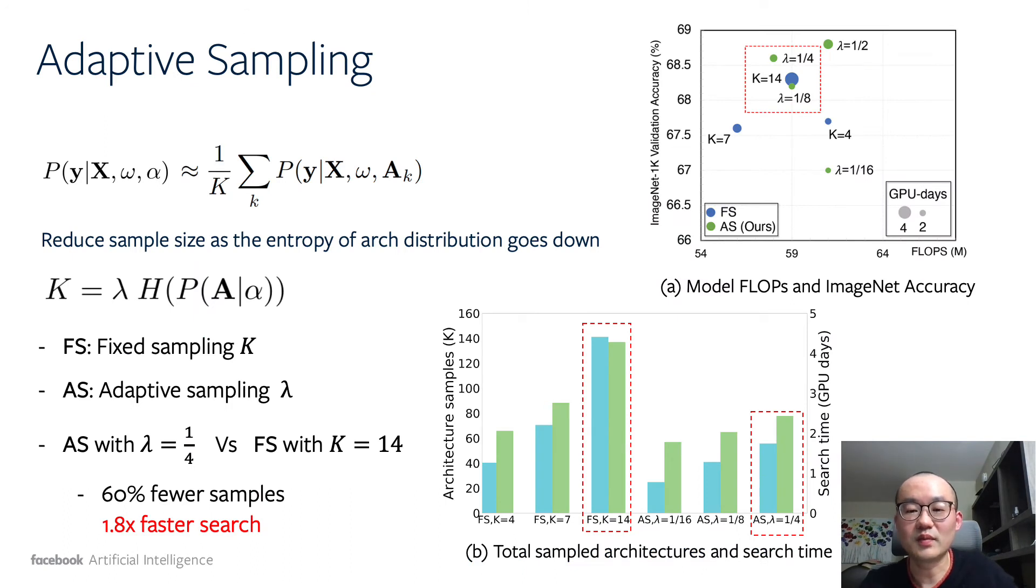Based on probabilistic NAS framework, we propose two techniques to further accelerate the search process. First, in the original probabilistic NAS framework, it samples a fixed number of architectures at each step.